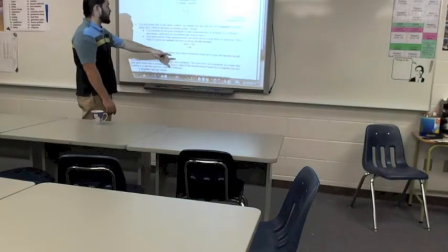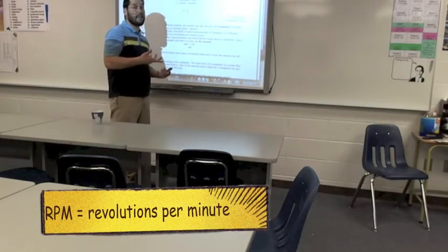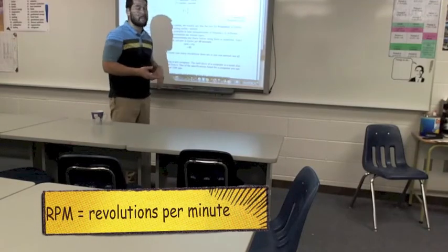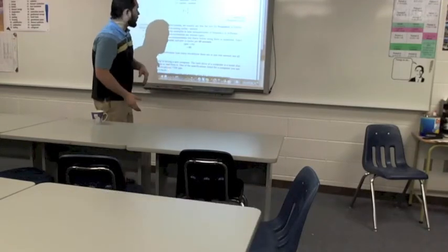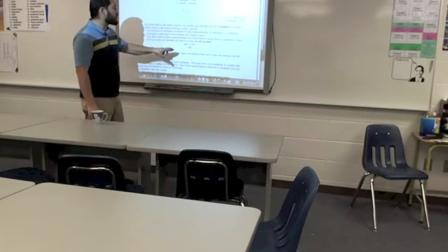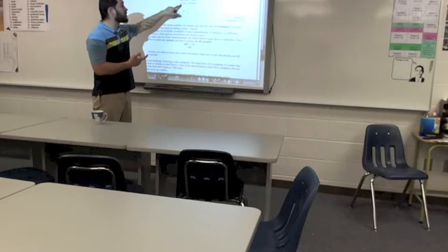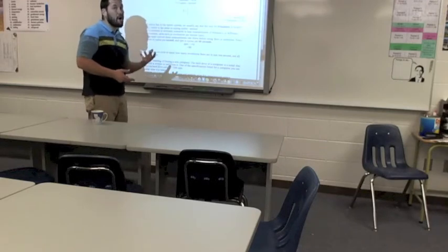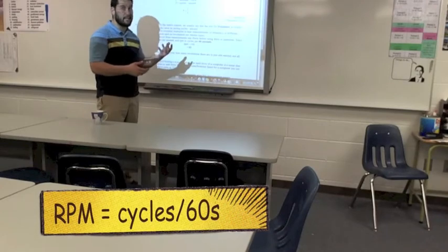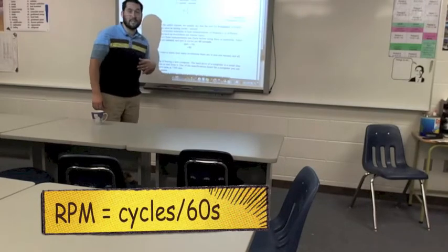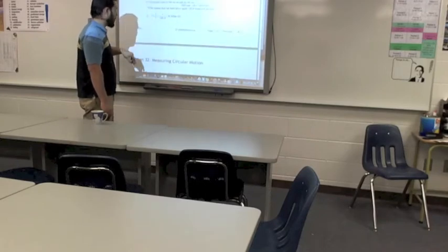Other terms worth mentioning are RPMs — revolutions per minute. For something like an engine, that's not represented in a period or frequency, it's RPMs. It's slightly different because it's revolutions per minute, not per second. If you take RPMs and divide by 60 seconds — converting minutes to seconds — you'd actually get a frequency for that.